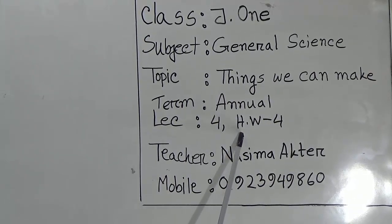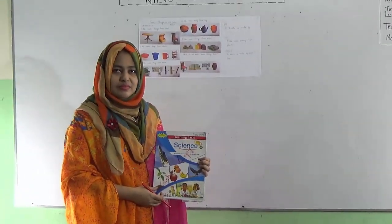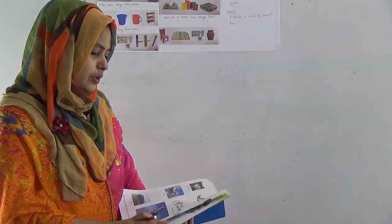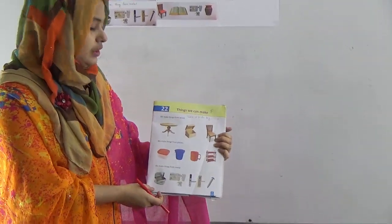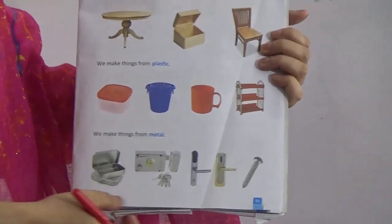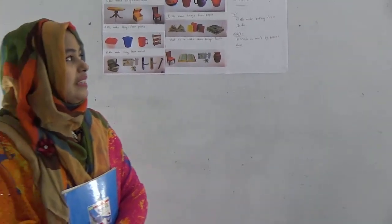I will give some SW — your SW number will be 4. This is your science book, and when you are watching this class you can open your science book also. Today we will learn Chapter 22, 'Things We Can Make,' on page number 51.